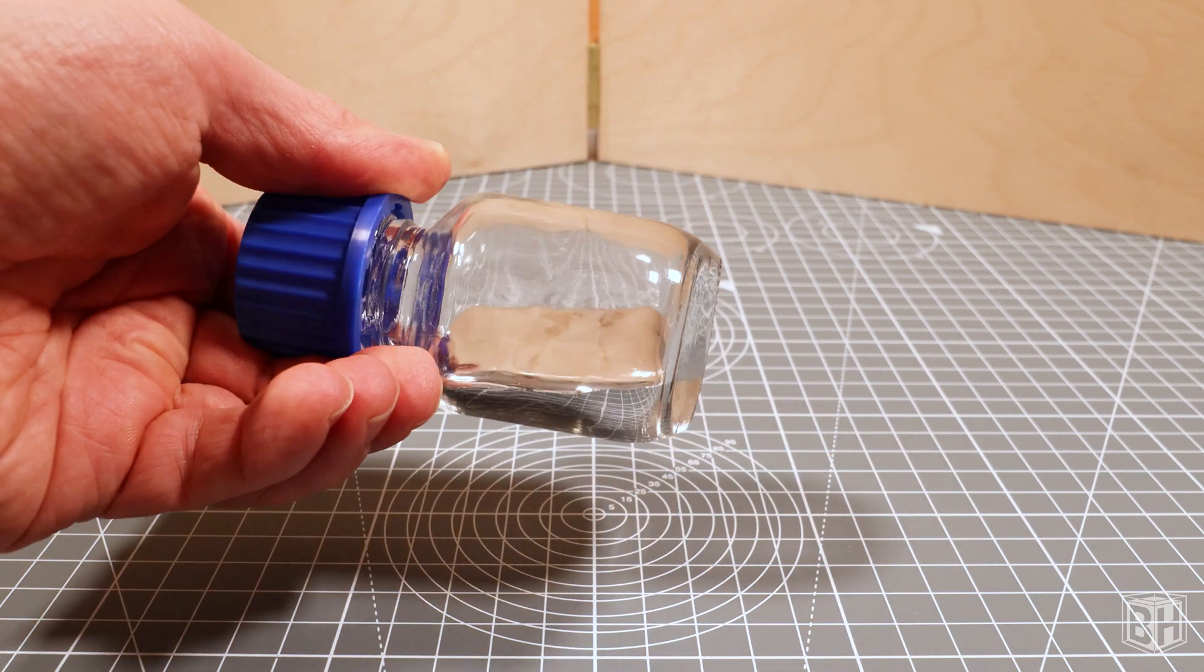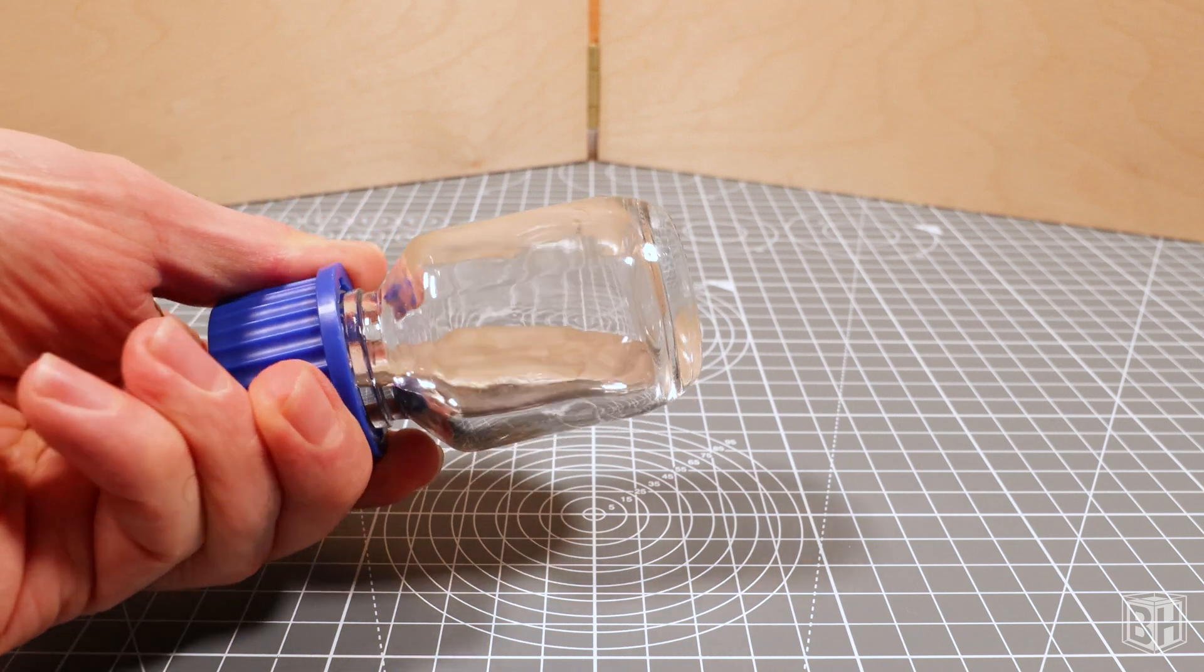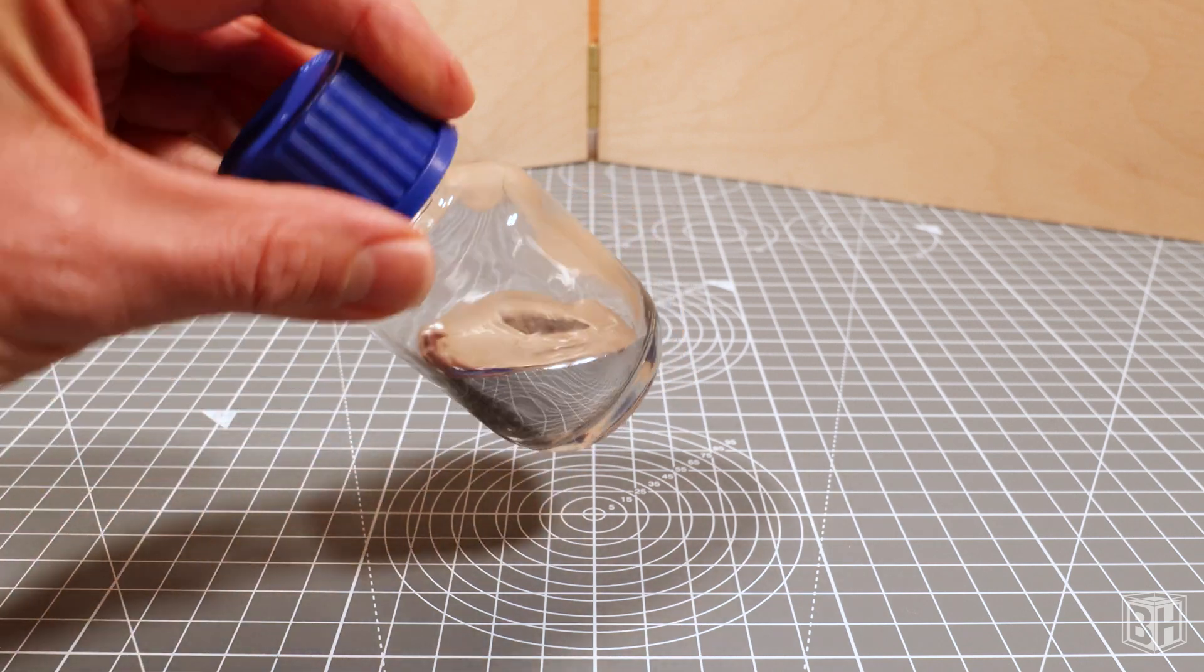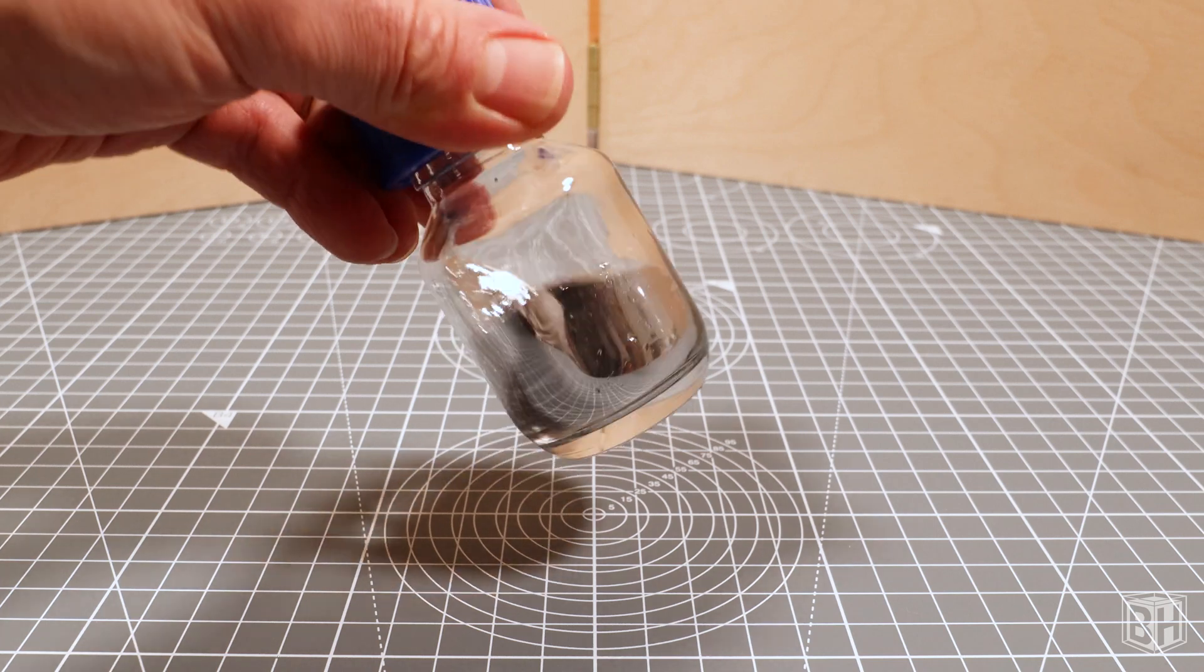In today's video we'll be experimenting to see if you can cast mercury in resin. We'll aim to find out whether it can be done, whether it reacts with the resin, and if it works, what a final piece will look like once the resin has hardened.